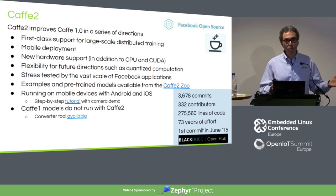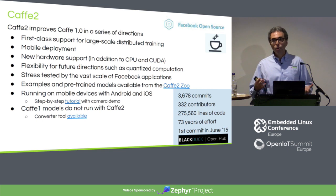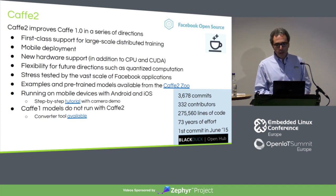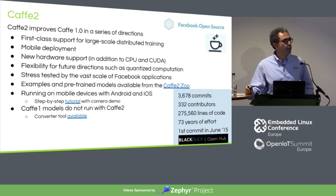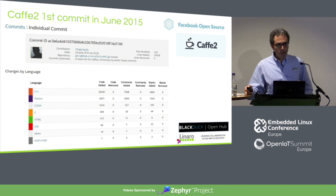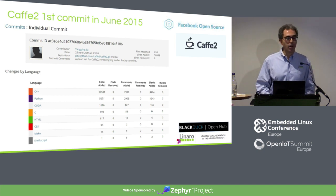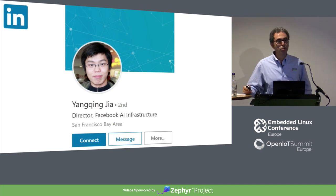So we're looking at TensorFlow from Google and Caffe2, now endorsed by Facebook. Between them they have their own model stores, and tools to move from one variant to the other. Caffe2 is much bigger than Caffe, with 275,000 lines of code, though still eight times smaller than TensorFlow. The first Caffe2 commit was also by Yangqing Jia in June 2015, adding 51,000 lines of code. He is now director of Facebook AI infrastructure.